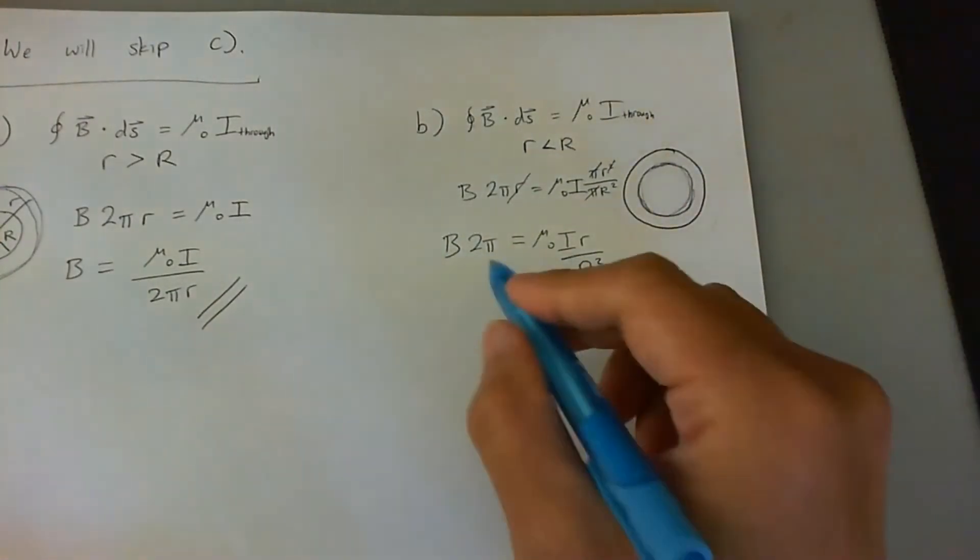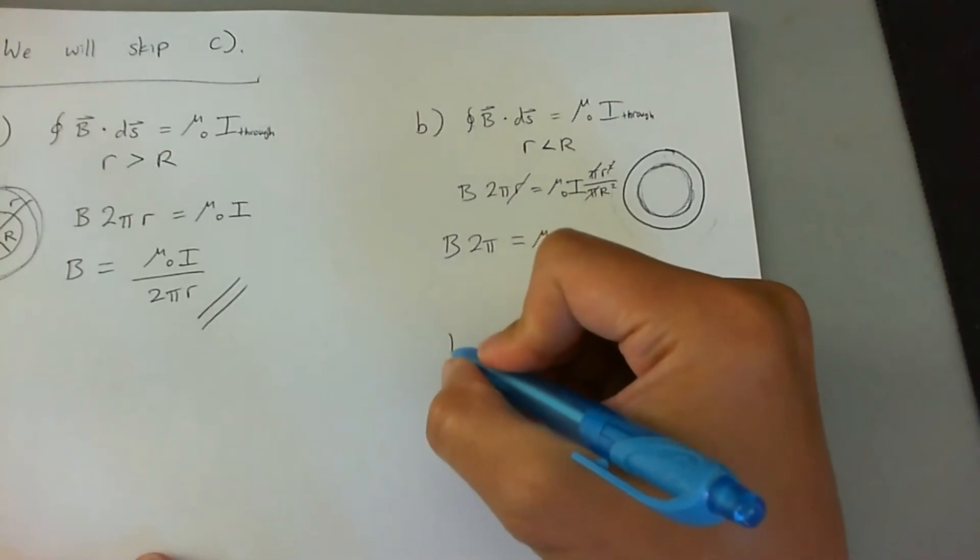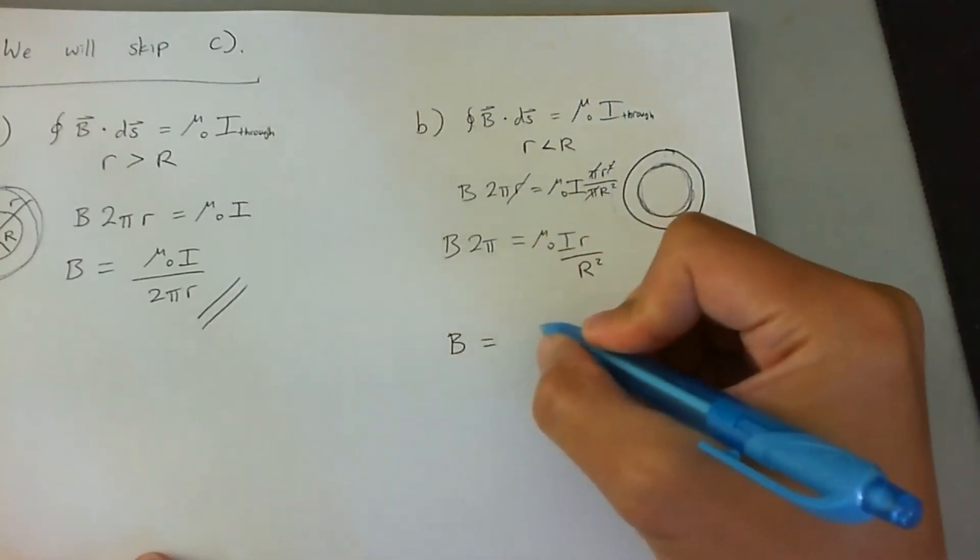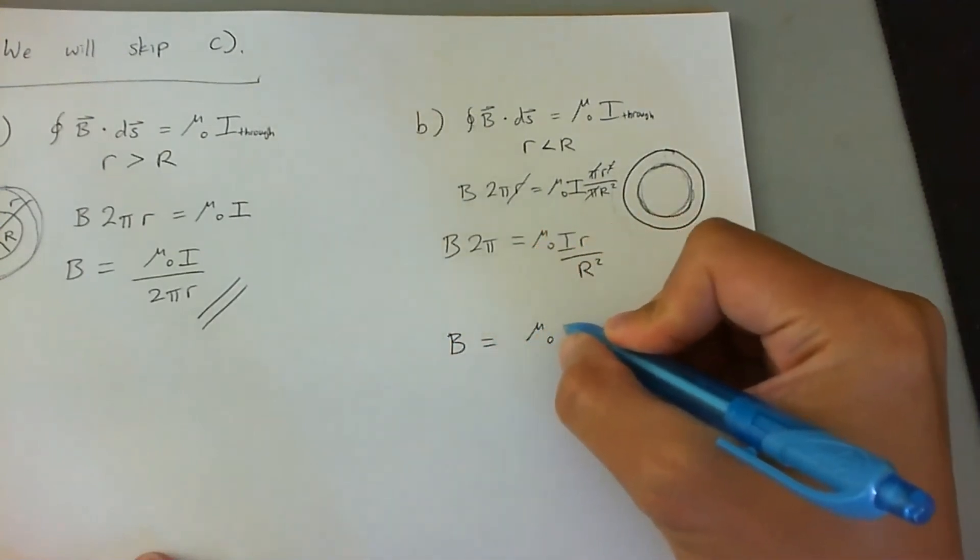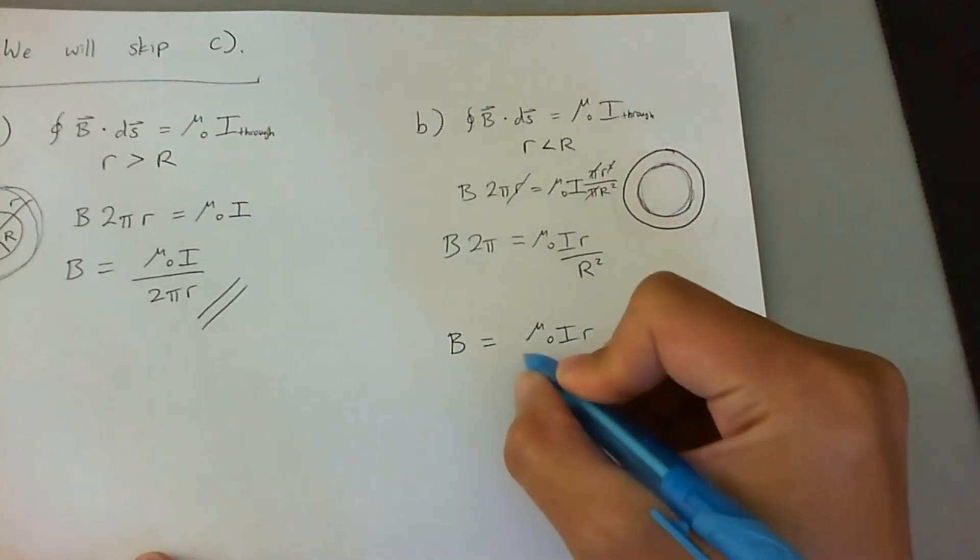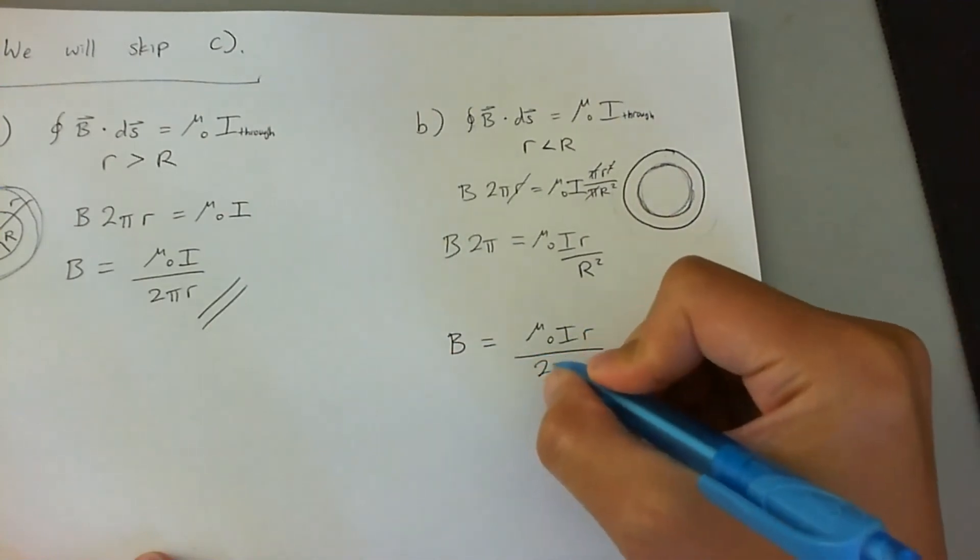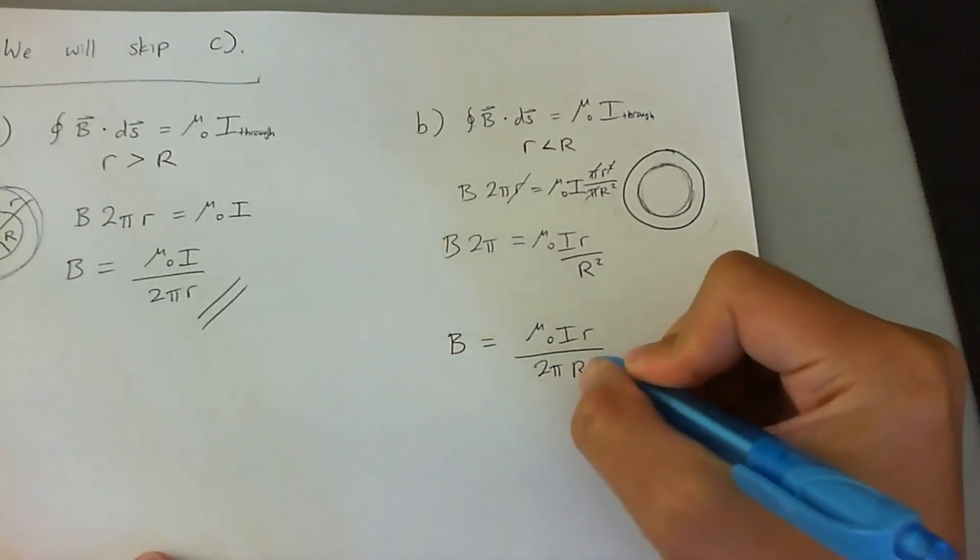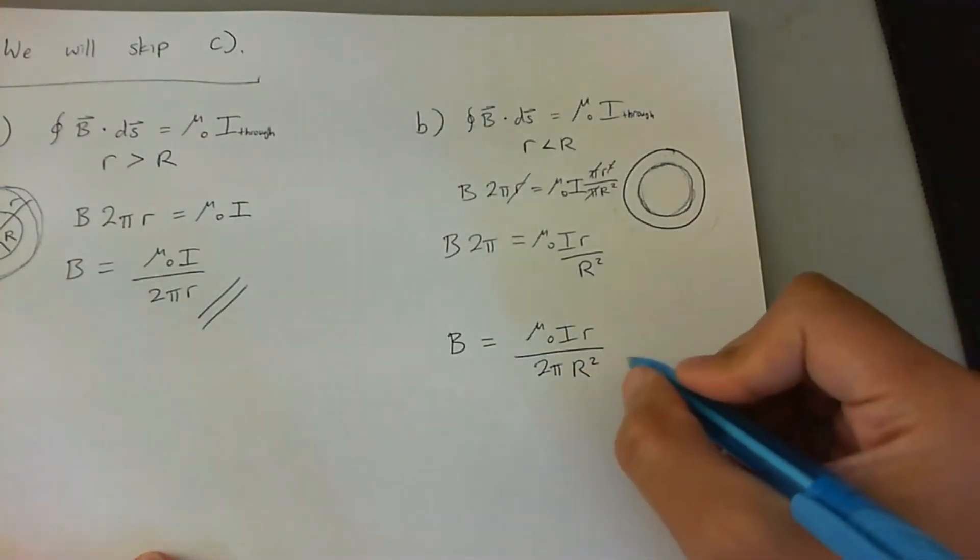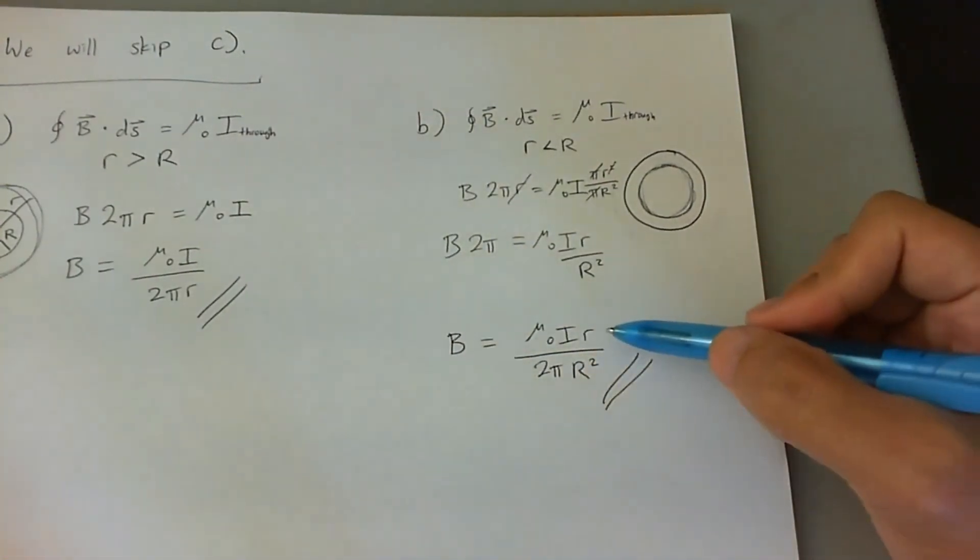Last thing to do now, get 2 pi on the other side, and we'll have B equaling to mu naught i r over 2 pi r squared. And that's your answer. Let's analyze it actually a little bit.